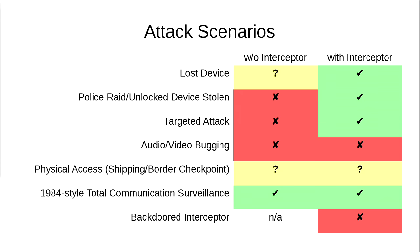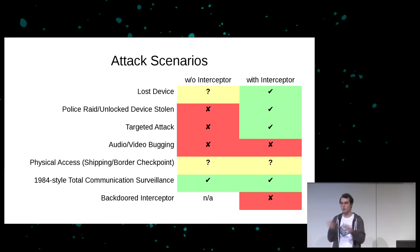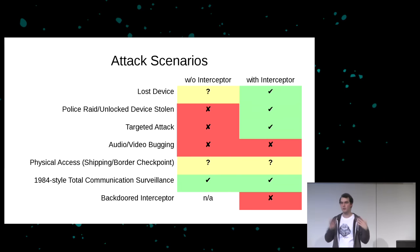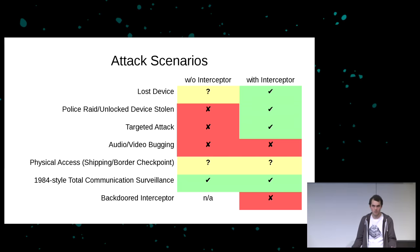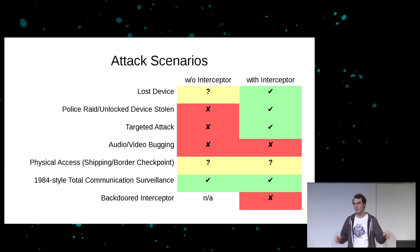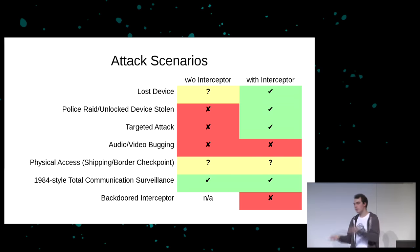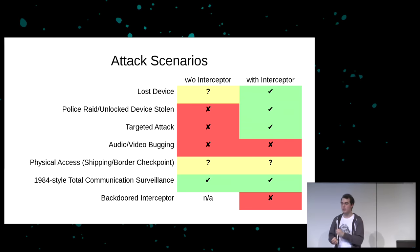The second scenario is an unlocked device being stolen — somebody takes your laptop while you're working and you don't have time to lock the screen. Fundamentally you'll have the same problem if you unlock this interceptor device for a period of time. But since you only need this interceptor device to decrypt and encrypt emails, and you don't do that all the time, you can have it locked most of the time even when your screen is unlocked. Also, since this interceptor device is hardware we're building ourselves, we can include additional security features — for example, a capacitive sensor in the palm rest detecting when your hands are removed, which would wipe the keys and require re-entering your password.